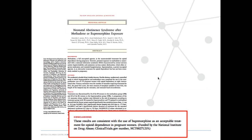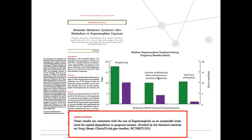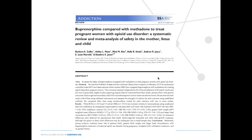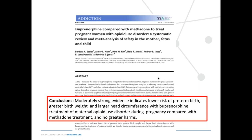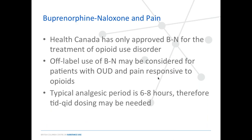Buprenorphine has been provided to women during pregnancy and shown some benefits over methadone. The MOTHER study found that mothers on buprenorphine had less neonatal abstinence syndrome compared to methadone. A more recent study found lower risk of preterm birth, greater birth weight, and larger head circumference with buprenorphine. So potentially buprenorphine may be a better medication in pregnancy and most likely safe. Australia has essentially updated their guidelines to say there's likely no harm associated with the naloxone. But technically in Canada, the recommendation would be to use the buprenorphine-only formulation.